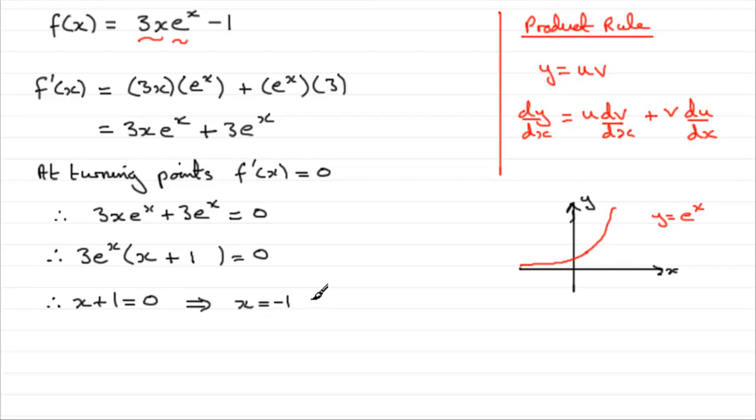Now, if we want the exact coordinates of the turning point, we've got the x-coordinate, it's minus 1. We need to get the corresponding y-coordinate. Or we need to find out what f of minus 1 is. We need to substitute minus 1 into here.